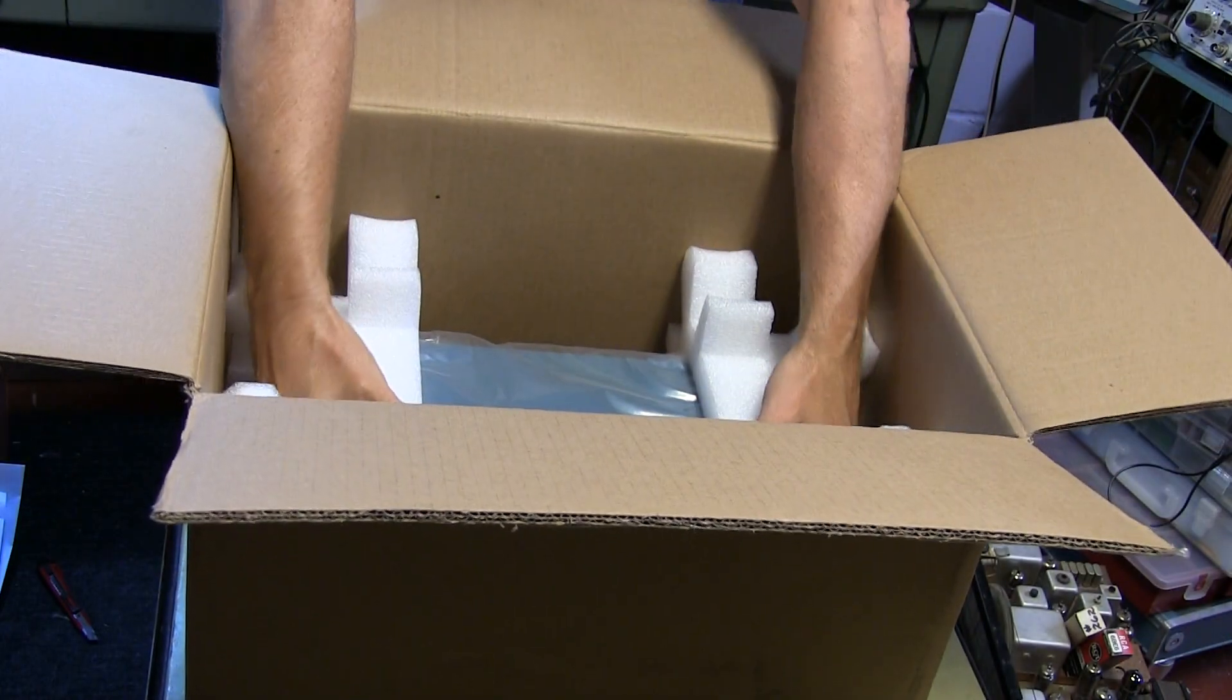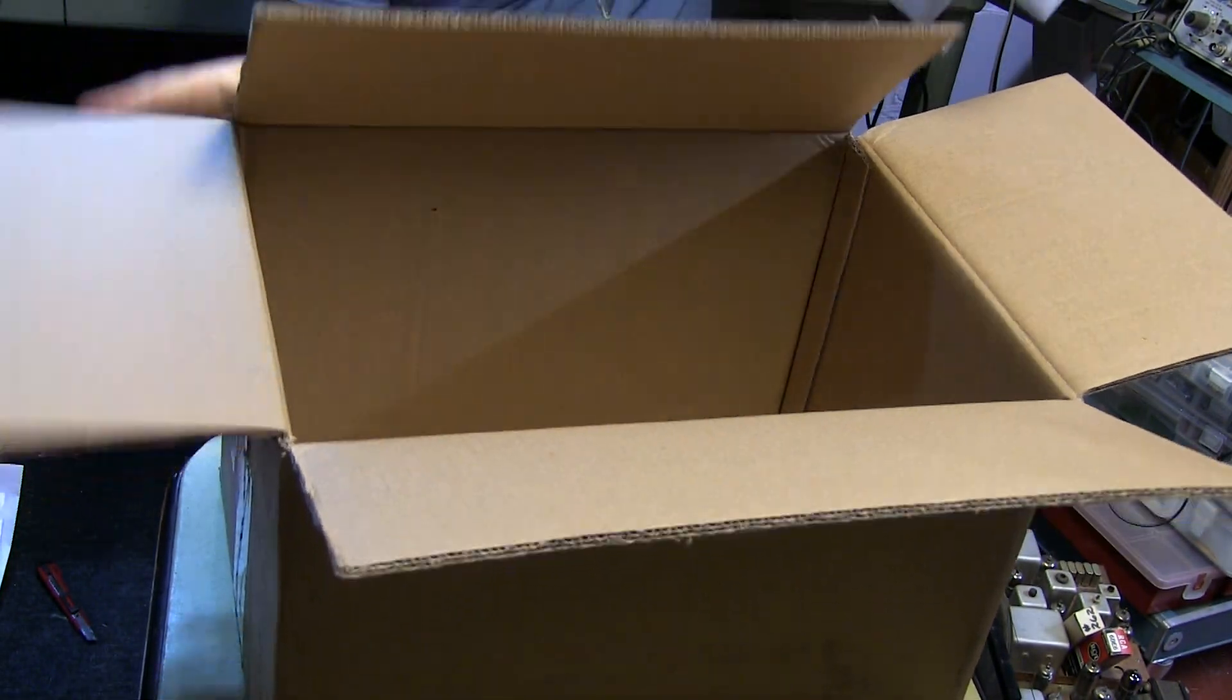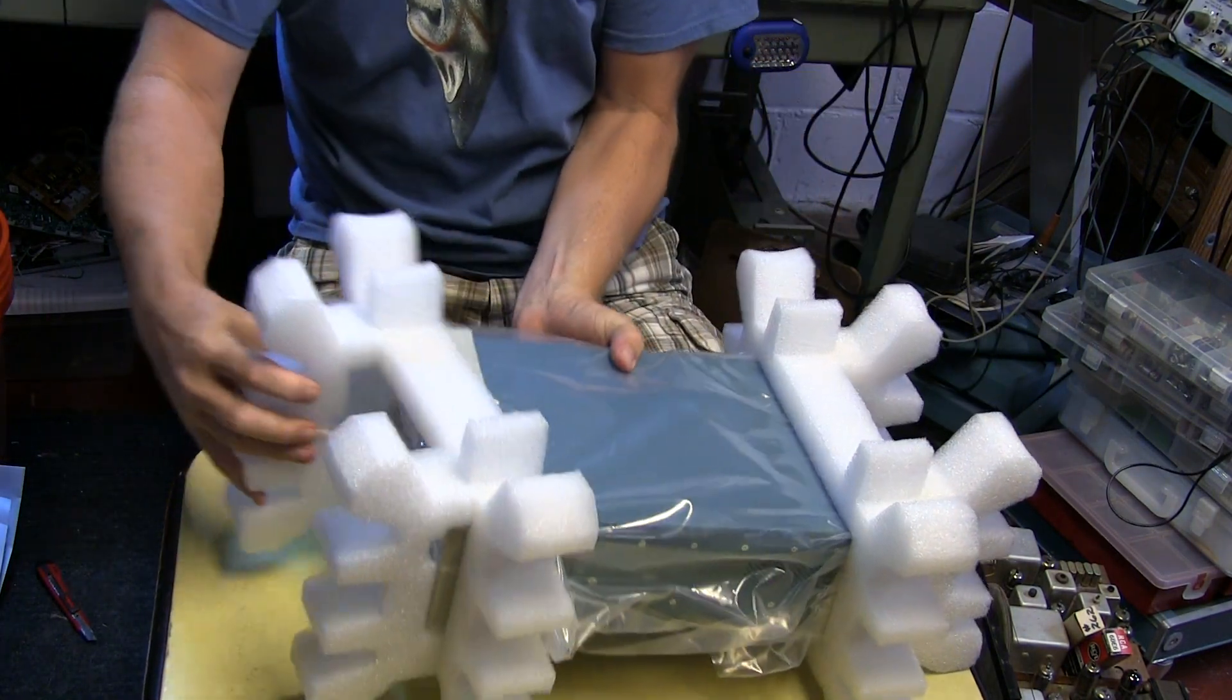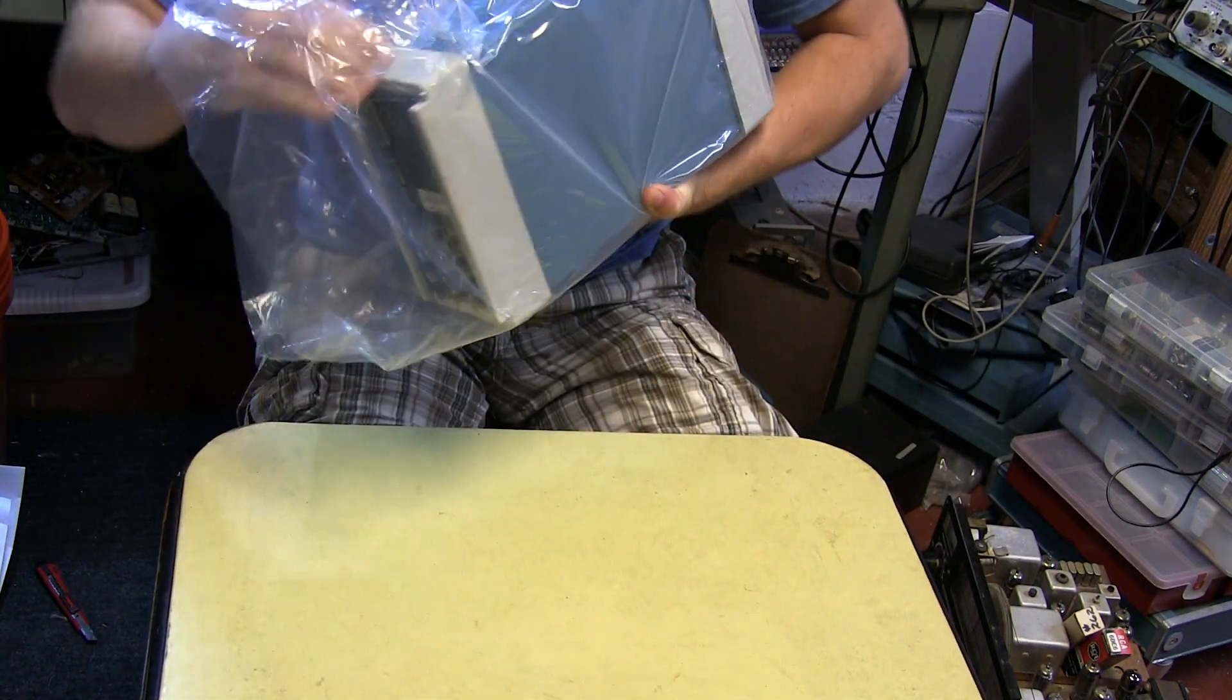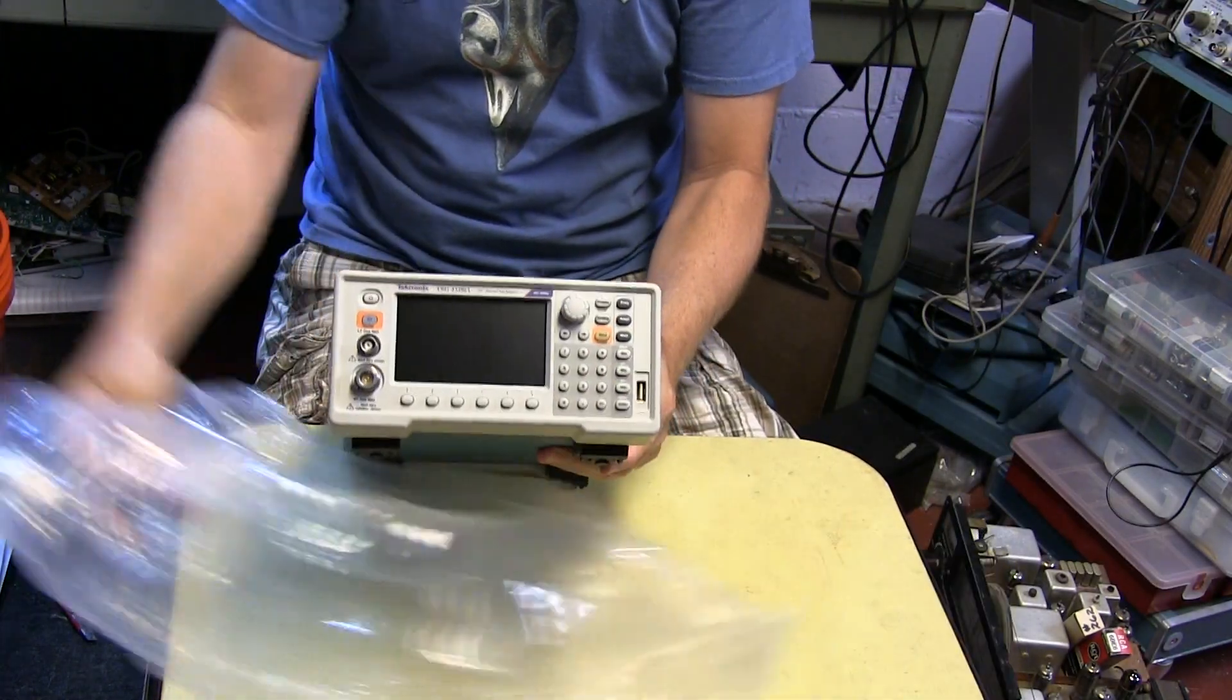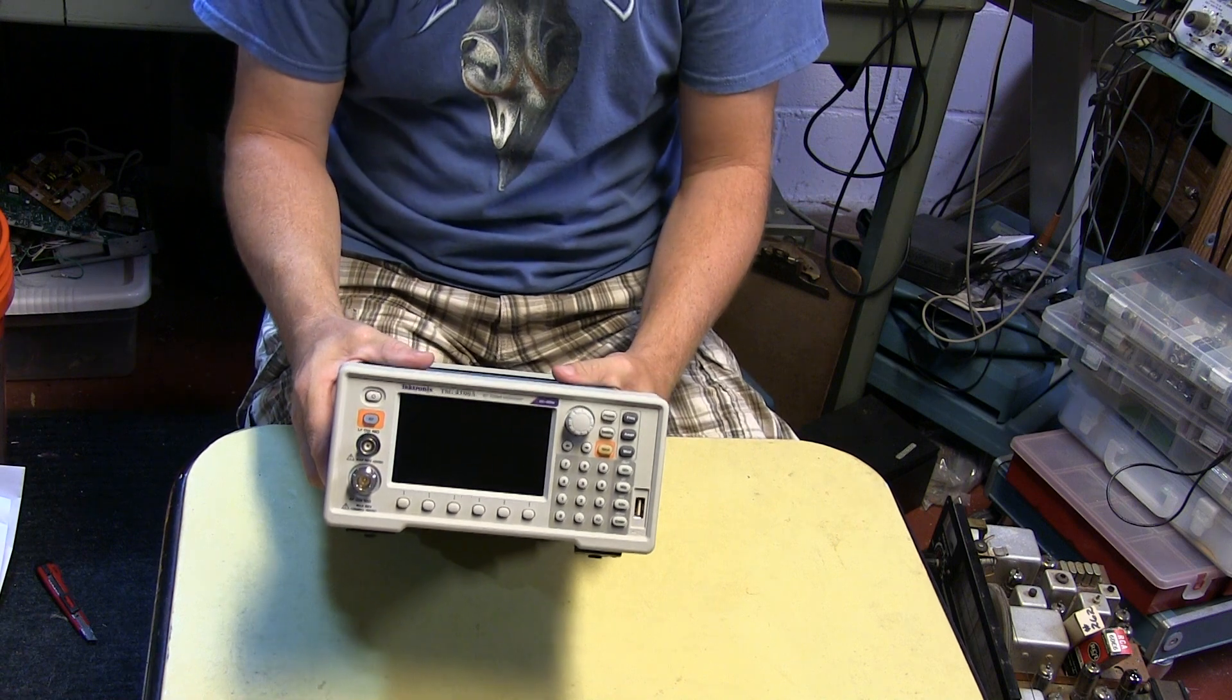Let's lift this baby out of here and let's even get the box out of our way. Put it off to the side here for a moment and let's see what we have for the signal generator. Put off the styrofoam pieces and the plastic wrap and there we go. This is a brand new Tektronix TSG 4106A, a DC to 6 gigahertz RF signal generator.